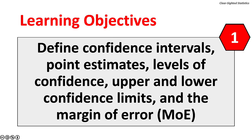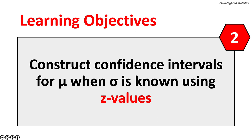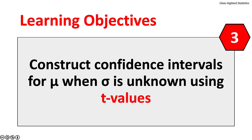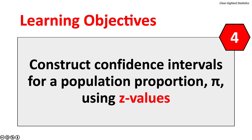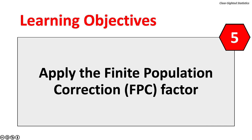This lecture has five learning objectives. One, we will define confidence intervals, point estimates, levels of confidence, lower and upper confidence limits, and the margin of error. Two, we will construct confidence intervals for the population mean when the population standard deviation is known using Z values. Three, we will construct confidence intervals for the population mean when the population standard deviation is unknown using T values. Four, we will construct confidence intervals for the population proportion, or pi, using Z values. Five, we will apply the finite population correction factor, or FPC, when needed.